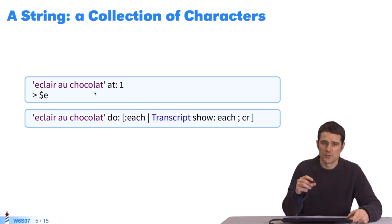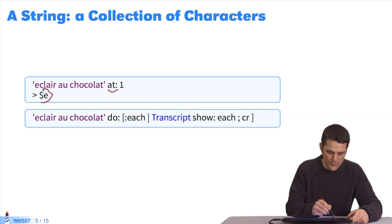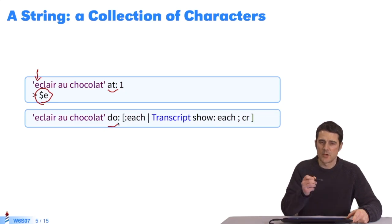Remember, we have common collection classes. For example, at for all the indexed collections. Eclair au Chocolat at 1 means I want element 1 of this collection, and I get e. It corresponds to this e. I can also use do, which runs through the elements of a collection. And after every loop, the block setting equals the first element of the collection, then the second, etc.